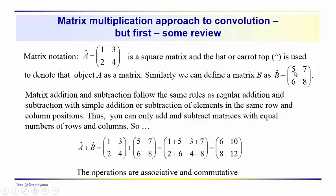We could have another matrix B with values five, seven, six, eight in the rows. If we look at addition and subtraction, they pretty much follow the same rules as regular addition and subtraction. Taking A plus B, we sum the elements in the same row and column: one plus five is six, three plus seven is ten, two plus six is eight, eight plus four is twelve, and so on.